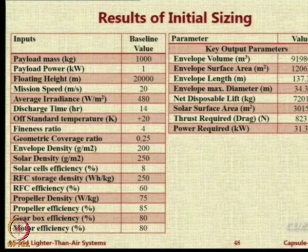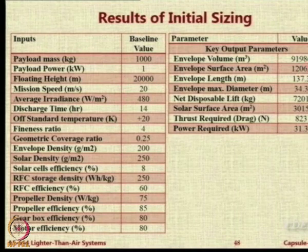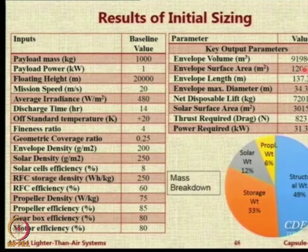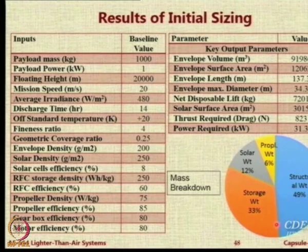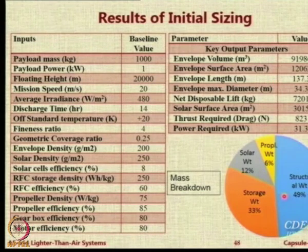To produce such payload and power, you will need around 138 meters of airship length. The thrust and the power required to overcome drag will be 31 kilowatts. Looking at the mass breakdown — the methodology should give a mass breakdown of the system — around 50% of the system weight is due to its structure. That is why the structural weight is the core problem: decreasing the GSM while keeping the same strength will give better results. The storage weight is over one third of total system weight, which is another problem.